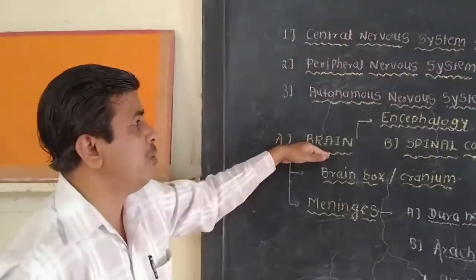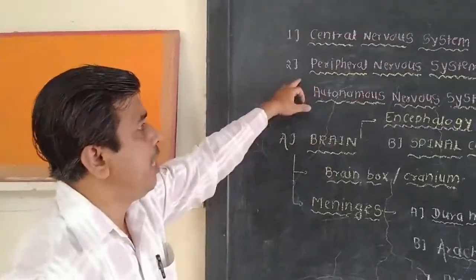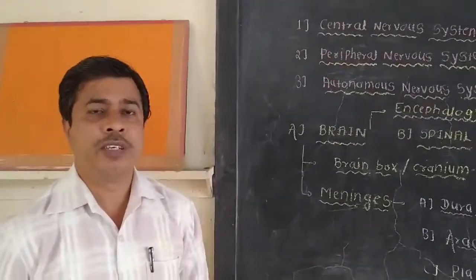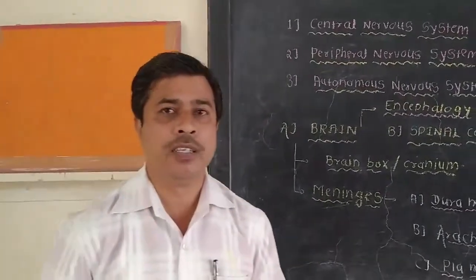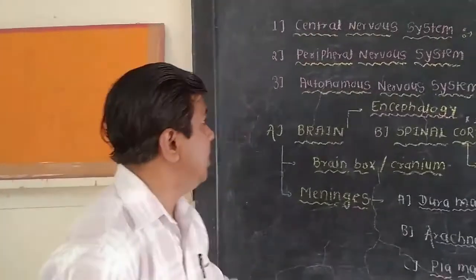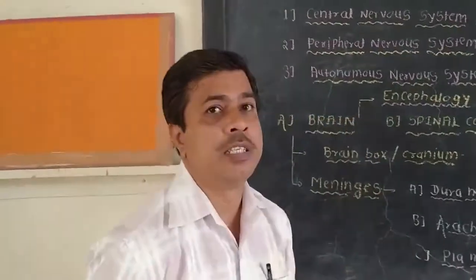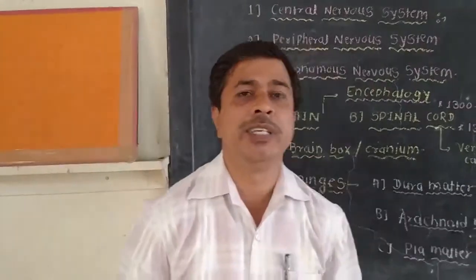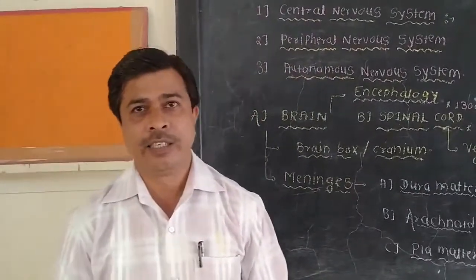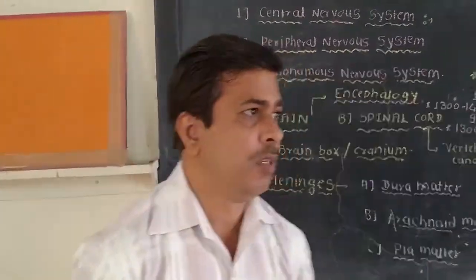We will discuss the brain in this video. The second part is the peripheral nervous system, which consists of different types of nerves — the cranial nerves and the spinal nerves. The third part is the autonomous nervous system, which is divided into two parts: the sympathetic nervous system and the parasympathetic nervous system.